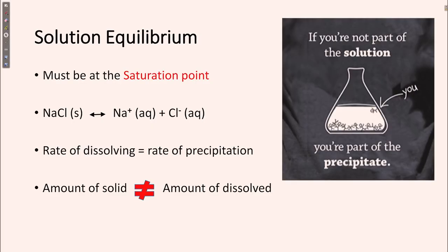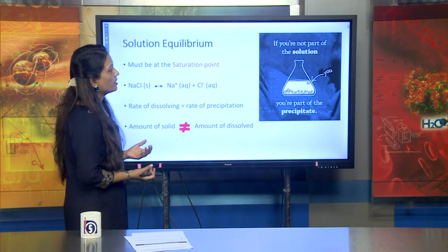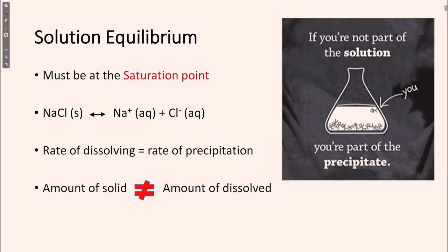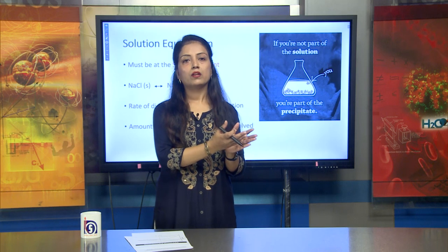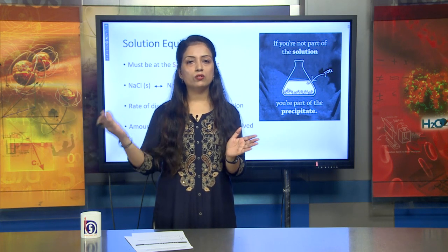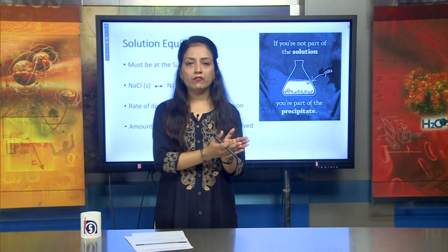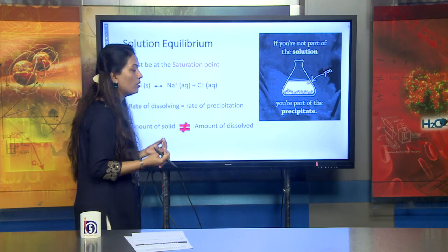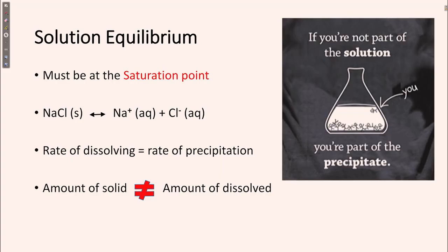In solution equilibrium, if you are not part of the solution, you are part of the precipitate. The rate of dissolution of salt equals the rate of precipitation. This must occur at the saturation point, where complete dissolution can occur. The rate of dissolving is equal to the rate of precipitation, but the amount of solid is not equal to the amount dissolved.